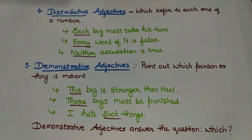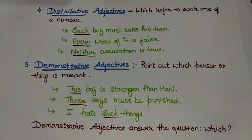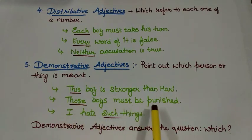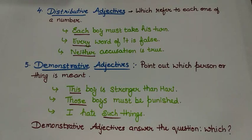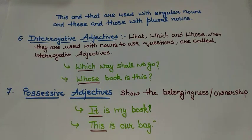The next adjective is demonstrative adjective. Demonstrative adjectives actually point out which person or thing is meant. Like, 'This boy is stronger than Hari' — here I am pointing out this boy. 'Those boys must be finished.' 'I hate such things.' The words 'this,' 'those,' and 'such' are representing demonstrative adjectives. Demonstrative adjective answers the question 'which' — which boy is stronger than Hari? This boy is stronger than Hari. The words 'this' and 'that' are used with singular nouns and 'these' and 'those' with plural nouns.